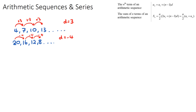If a sequence has dot dot dot and goes forever, this indicates it is an infinite sequence that will continue up to infinity. However, if a sequence stops — for example, 4, 7, 10, ... 19 — this is a finite sequence. The last term is given, so infinite means it goes forever and finite has an ending term.